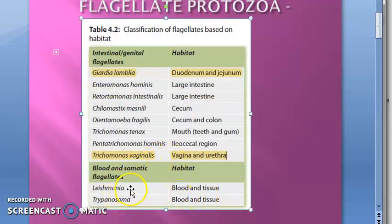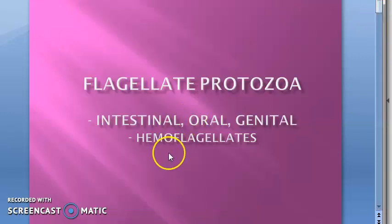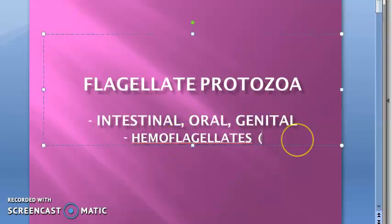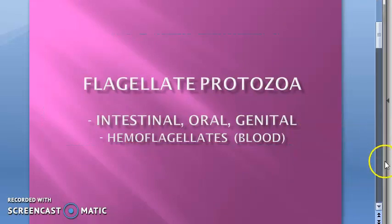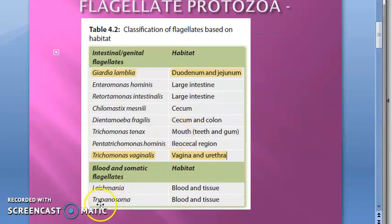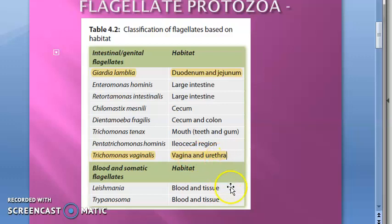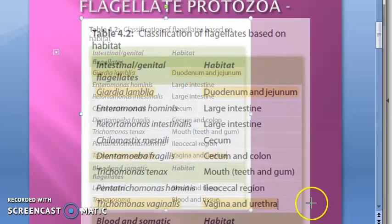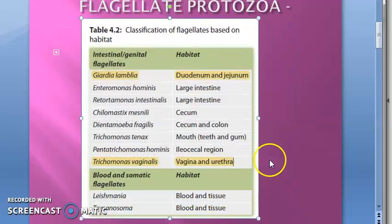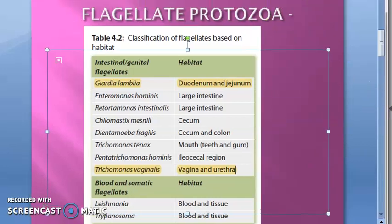In blood and tissue, you have Leishmania and Trypanosoma — that is why they are called hemoflagellates, as 'hemo' refers to blood. The intestinal and genital flagellates include Giardia lamblia and Trichomonas vaginalis, and these two are very important. Let us see what else is important in this chapter.